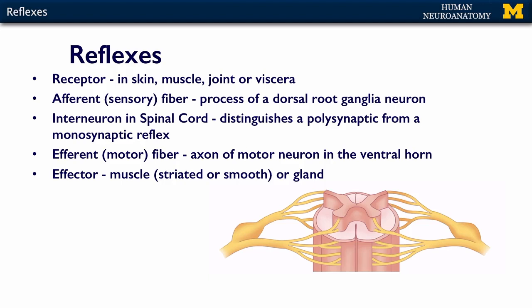Sometimes you'll use an interneuron in the spinal cord, and sometimes you won't. Interneurons are usually there — this is what distinguishes a polysynaptic, i.e. more than one synapse, from a monosynaptic, i.e. one synapse, reflex. We'll talk about the difference between the two. You need an efferent motor fiber — that's the axon of the motor neuron that's going to cause the movement part of the reflex. And then you need some kind of an effector, which is going to be the muscle — striated or smooth, depending on whether this is somatic or visceral — or even a gland.